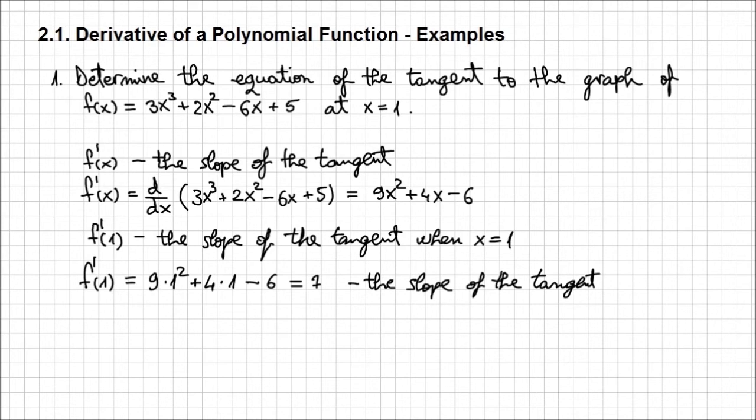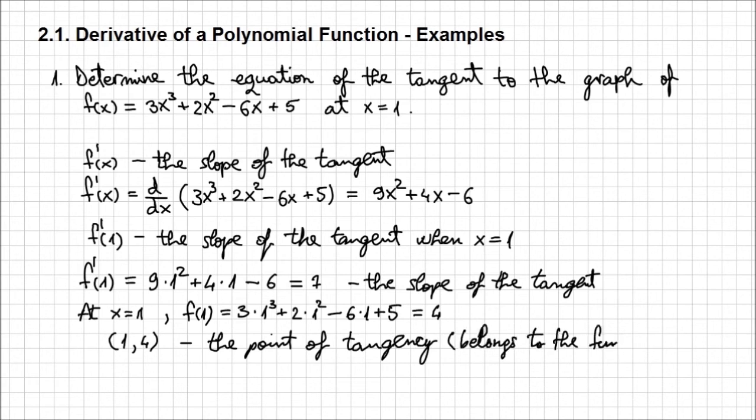And now we have the slope of the tangent. To determine the equation, we need also one point on that tangent, and one point that we know is exactly when x = 1. All we have to do now is when x = 1, calculate f(1) to find the y value for that point of intersection, that point that is common to both the tangent and the graph of the function. So f(1) is going to be 3 times 1³ plus 2 times 1² minus 6 times 1 + 5. And if we evaluate this expression, it's going to be 4. So we can say that the point (1, 4) is the point of tangency, belongs to the function and the tangent as well.